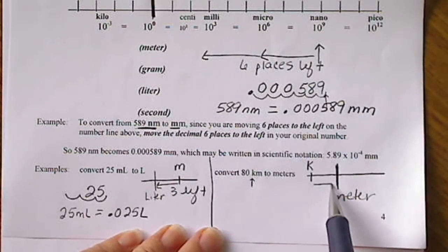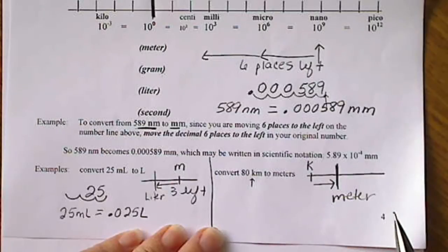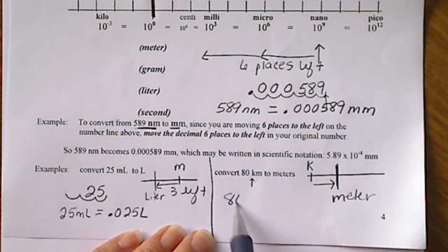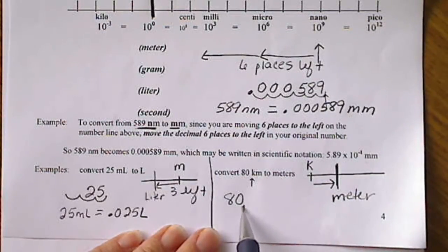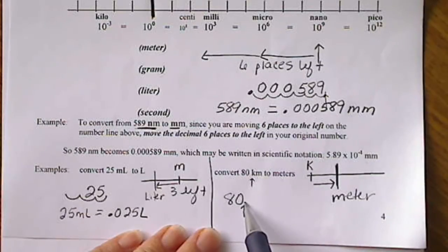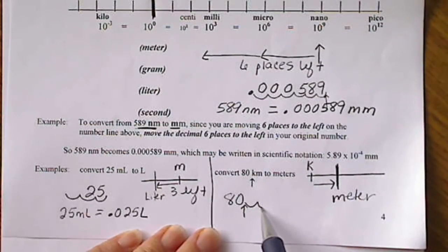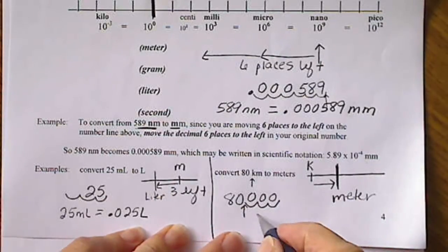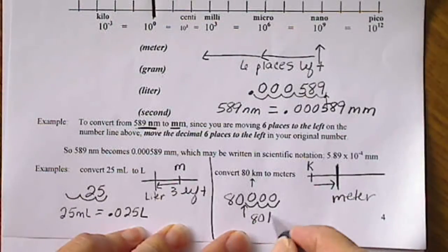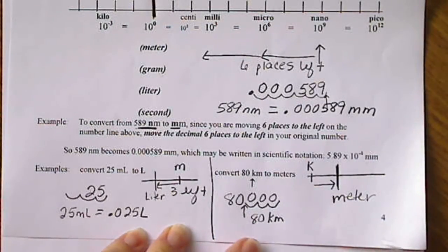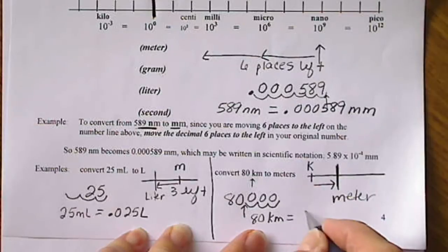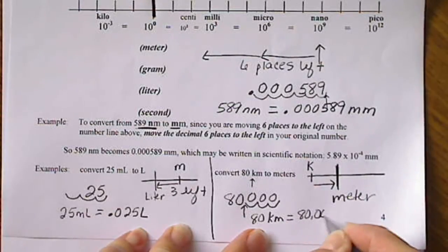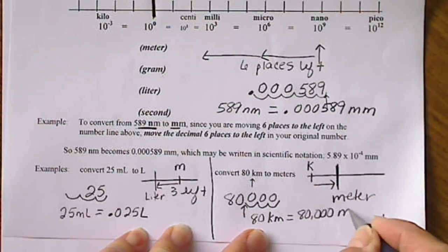So 80 kilometers, the decimal would be here. We're going to move the decimal three places to the right and fill those in with zeros. So 80 kilometers, which is approximately 55 miles, is going to equal 80,000 meters.